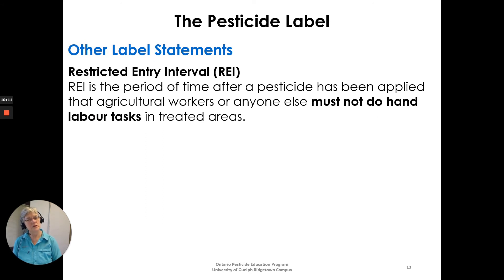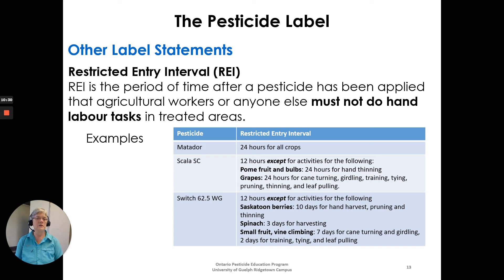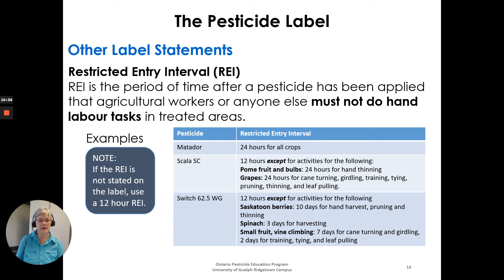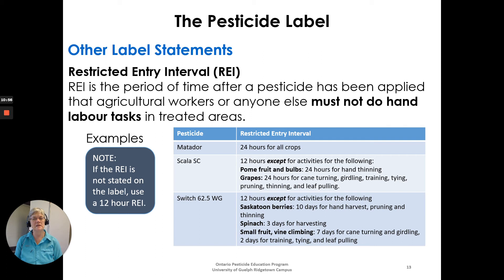The restricted entry interval (REI) is the period of time after a pesticide has been applied during which agricultural workers must not perform hand labor tasks in treated areas. For example, Matador has a 24-hour REI for all crops; Scala SC has a 12-hour REI except for specific hand activities on palm fruit, bulbs, and grapes which require 24 hours. If the REI is not stated on the label, the default is a 12-hour restricted entry interval.